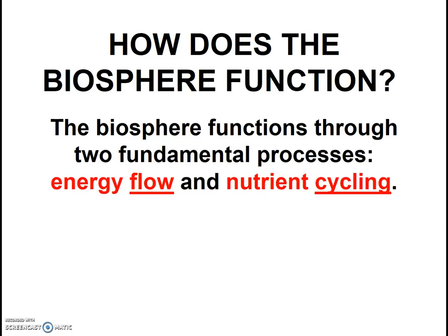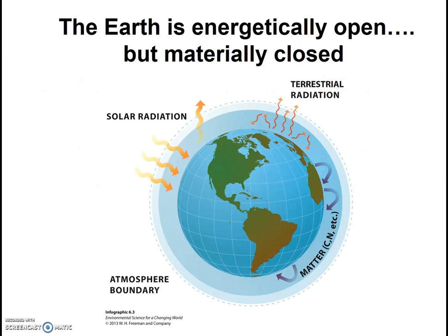Energy flow and nutrient cycling. The Earth is energetically open and materially closed. That means that energy comes in and out of the Earth system, but matter — like carbon, water, nitrogen, and oxygen — does not. Biosphere 2 was designed like the Earth: it allowed in sunlight, but was closed to any sort of matter entering and leaving. As a consequence of being a closed system for matter, anything that scientists or other organisms in the system ate, breathed, or otherwise used had to come from within the system. Further, all the waste of the organisms stayed within the system as well.